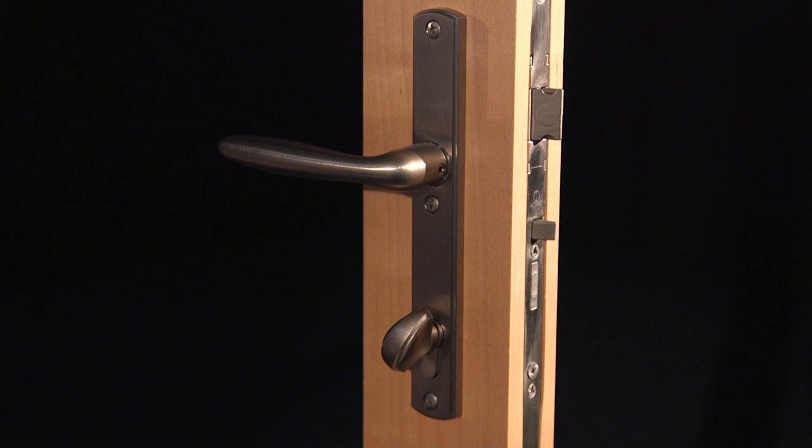If everything functions correctly, snug the mounting screws to the panel. If there is some binding, loosen the mounting screws and adjust the backplates to allow for free movement of the handles. This could be an indication that the original door preparation for your trim was not precise.